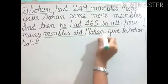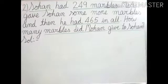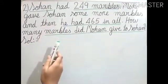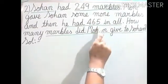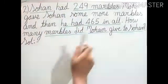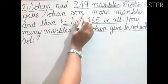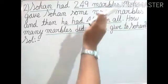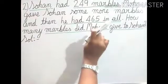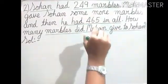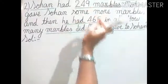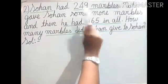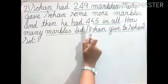So what is the first statement? We will write total number of marbles because this number is greater. Here 465 and here is 249. In subtraction, remember — always write the greater number in the first place and then the smaller number in the second place. After reading the question, always check which is greater and which is smaller. So total number of marbles equals 465.